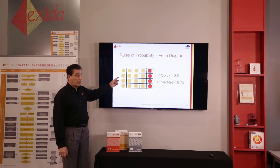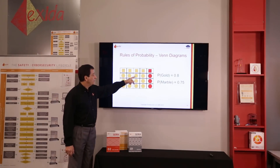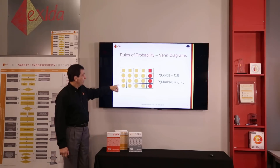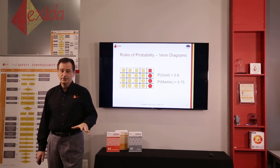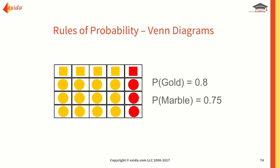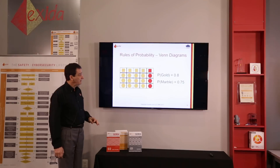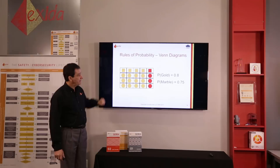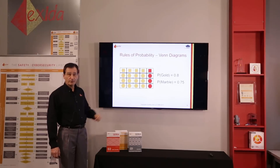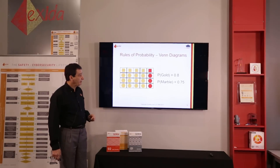For marble, we have 15 out of 20 possibilities, and 15 over 20 is 0.75. We don't know the assumptions behind this, but from a visual representation point of view it's very easy to see how we get the probability of gold and how we get the probability of marble.